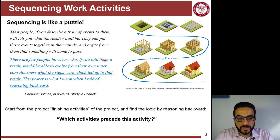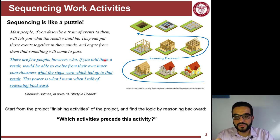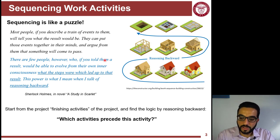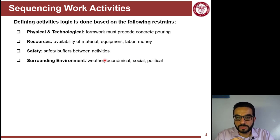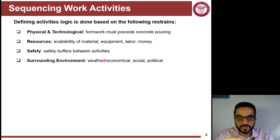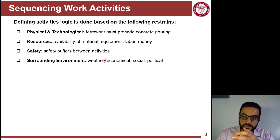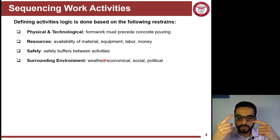The sequence is the logic, and you answer one question every time you backtrack: for each activity in your WBS, ask 'What activities precede this activity?' You have to think about what this activity depends on. When answering, consider four types of dependencies. First, physical and technological: beams need columns in place first, columns need the floor done first, and you keep backtracking until you reach the foundation.